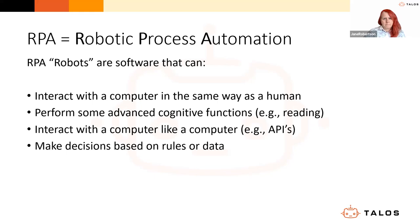In addition to emulating human interactions, robots can also communicate computer-to-computer. The most common method is APIs — Application Programming Interfaces — which allow systems to talk to each other, sending and retrieving data. This means RPA robots can work across multiple applications and systems, streamlining end-to-end processes. It doesn't matter whether there is an API or not; the robot can interact with the system either in the human way or in a computer-to-computer mode.